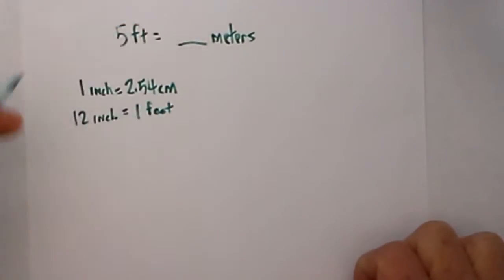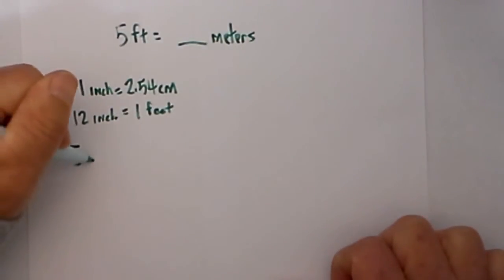So in other words what I am trying to say is just use what you know and see if you can get to your conversion. So here is how I am going to set it up. First I am going to take feet and place it over one. Remember my goal is meters.